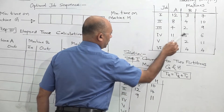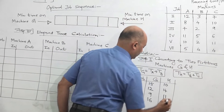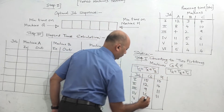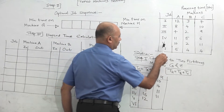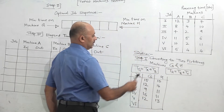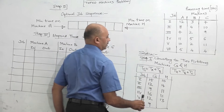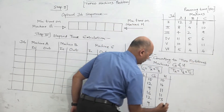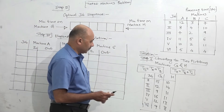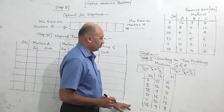Job 4: 11 plus 5 = 16, and 5 plus 6 = 11. Job 5: 10 plus 2 = 12, and 2 plus 11 = 13. Job 6: 5 plus 4 = 9, and 4 plus 4 = 8. So now step 1 is done — we have converted the 3-machine problem into a fictitious 2-machine problem with machines G and H.